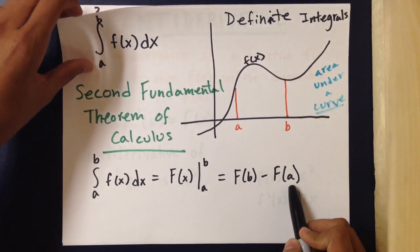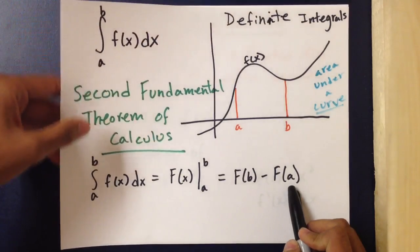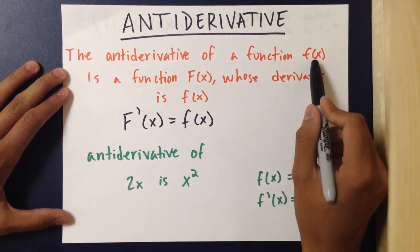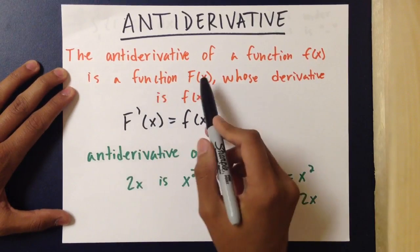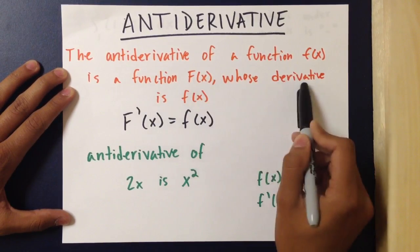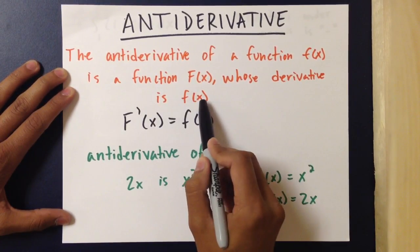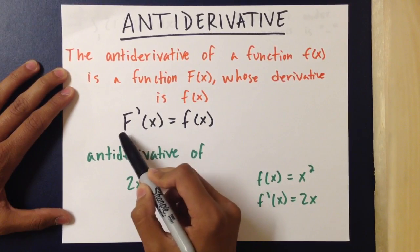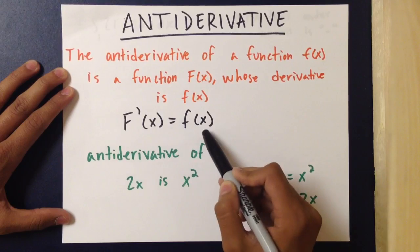Now you're probably wondering what an antiderivative is. An antiderivative of a function f(x) is a function F(x) whose derivative is f(x). In other words, the derivative of the antiderivative F(x) equals f(x).